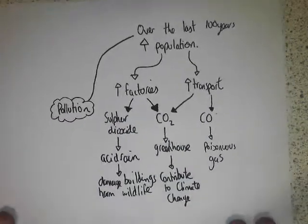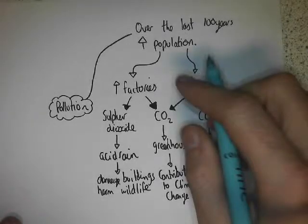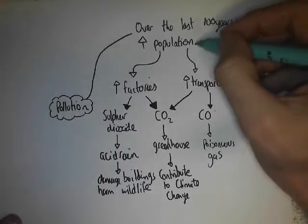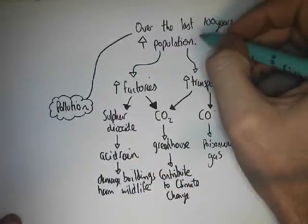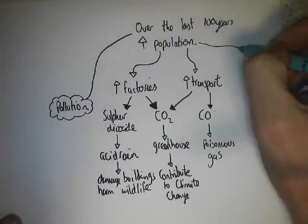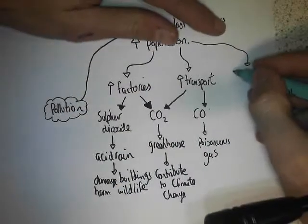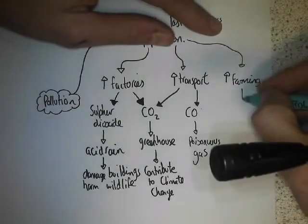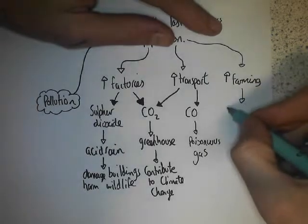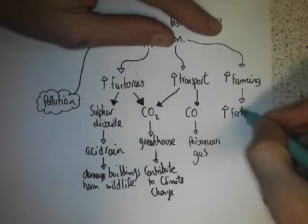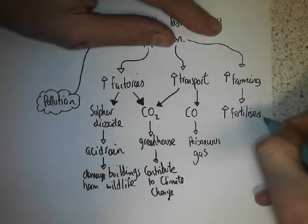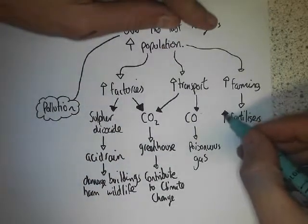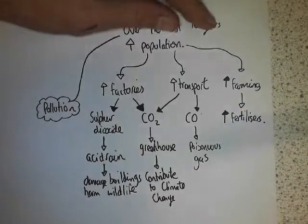The last thing to mention about an increase in population: a large part of food, whether fed to cattle or going straight to our mouths, will come from farms. So another area is an increase in farming, which means an increase in fertilisers. This increase in fertilisers causes a process called eutrophication.